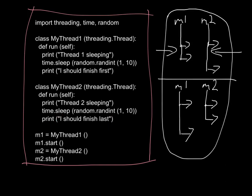In that bad case, M2 has printed 'I should finish last' first, and M1 prints 'I should finish first' last — the opposite of what we want. In the worst case, this out-of-order execution can cause your program to crash. For example, if Thread 1 was calculating something that Thread 2 needed, and Thread 2 used that input before Thread 1 finished, it could end up using junk input and fail.